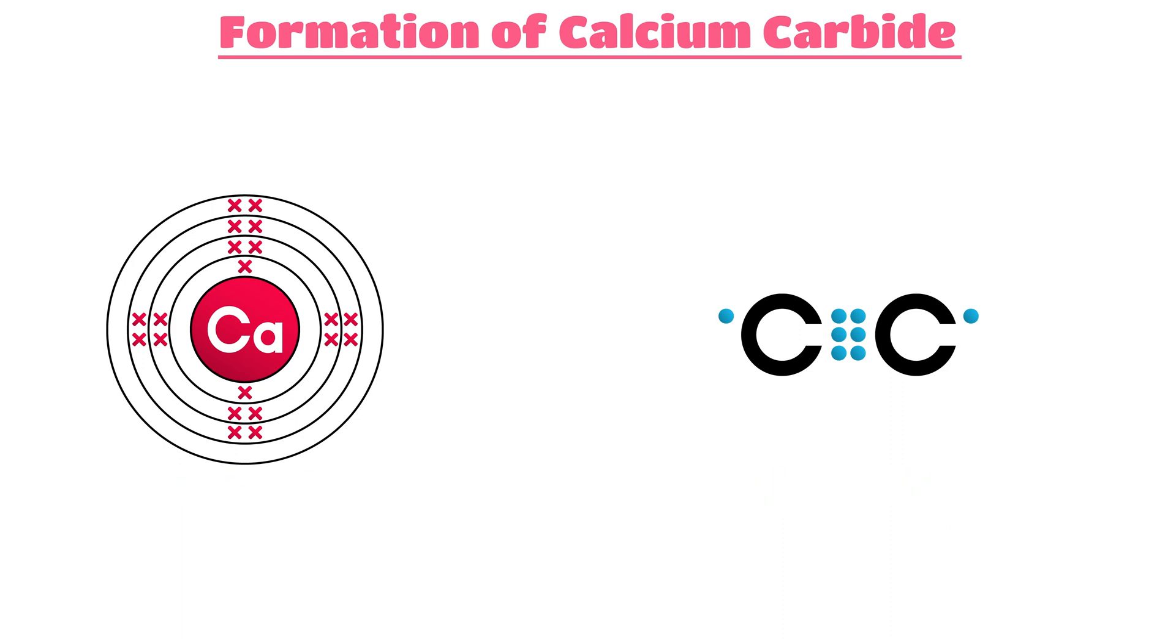During the formation of calcium carbide, the calcium atom loses two electrons, forming a divalent cation—that is, a cation with a charge of positive two. Two atoms of carbon form the carbide radical.